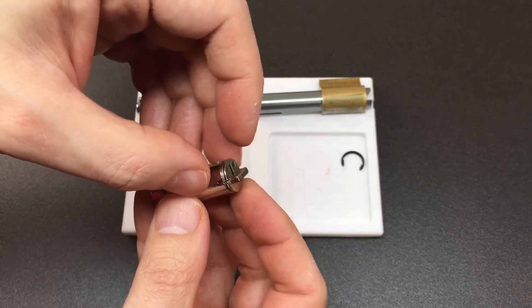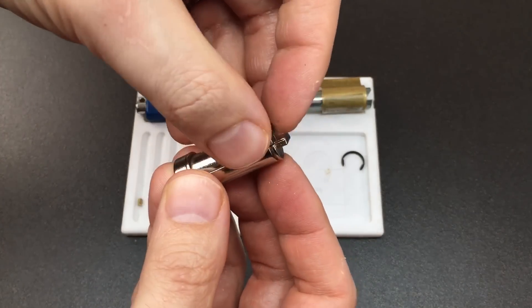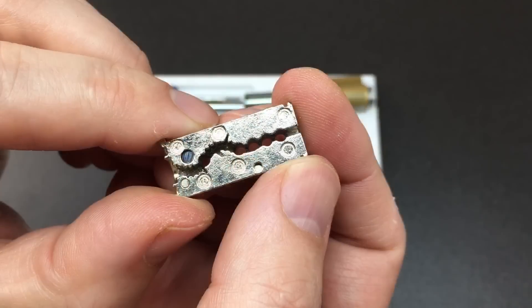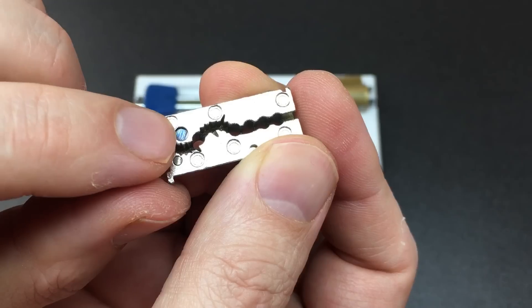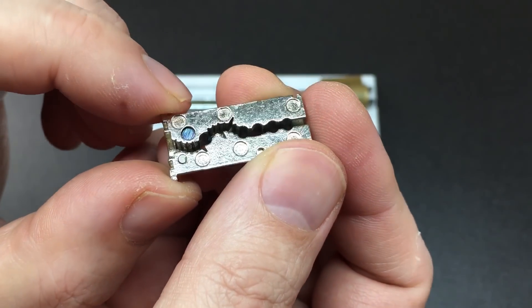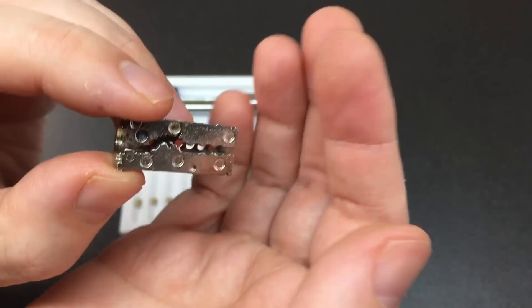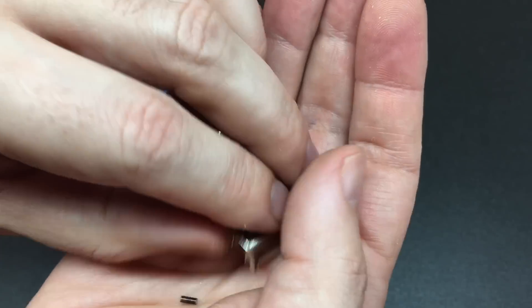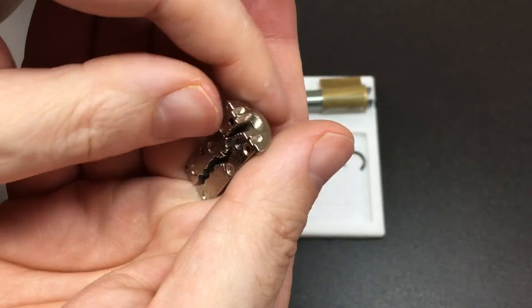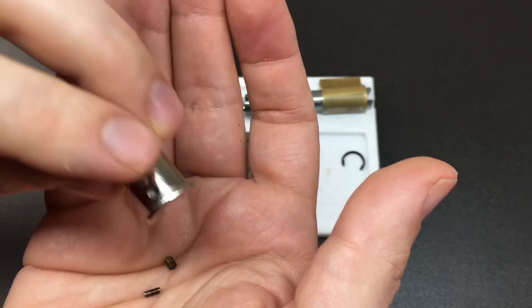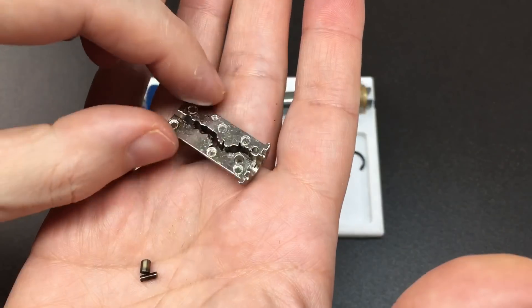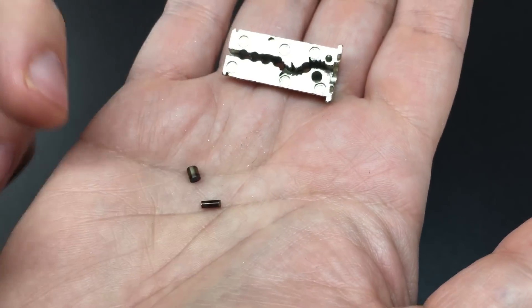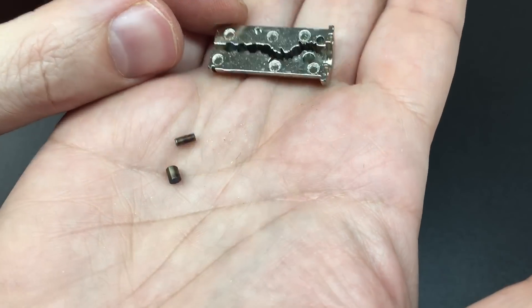Now you'll be able to see that this core will split in half and there are more features inside. You can see on this side that there are two anti-drill hardened steel pins which should just tip out. These pins are just hardened to stop drill attacks from the front of the lock.